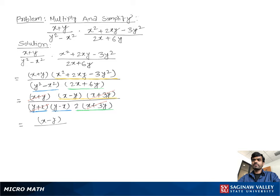Now we see (x + y) cancels out and (x + 3y) cancels out. We are left with (x - y) on top and 2(y - x) on the bottom. We multiply the top by a negative sign: negative times negative gives (x - y), written as negative(y - x) over 2(y - x).